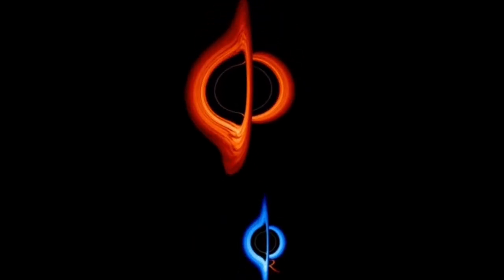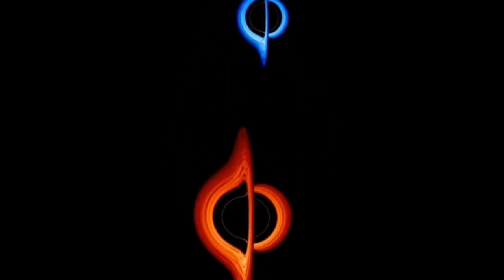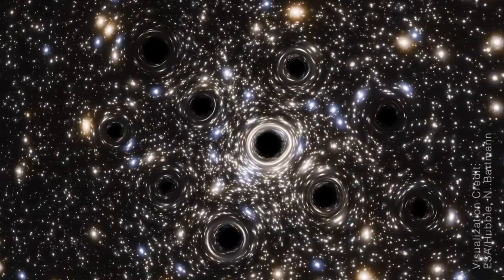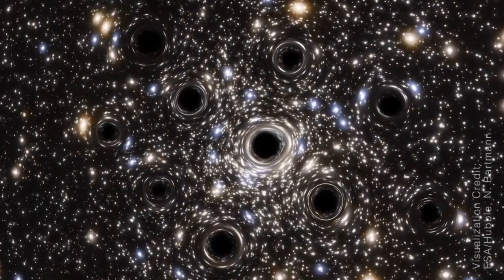As an object approaches the event horizon, the length of its gravitational gradient becomes so extreme that it is stretched and twisted into a filamentous shape resembling spaghetti strands.